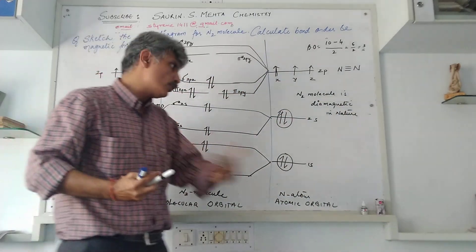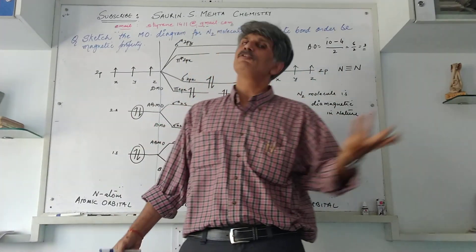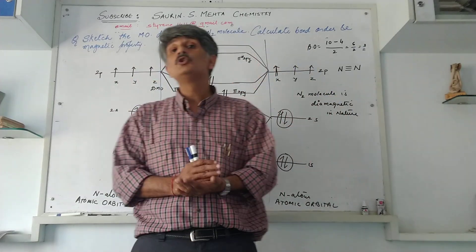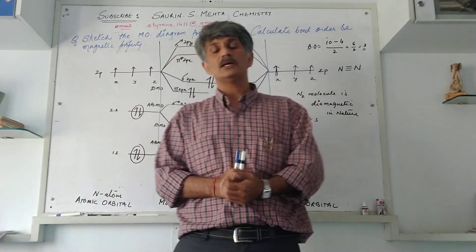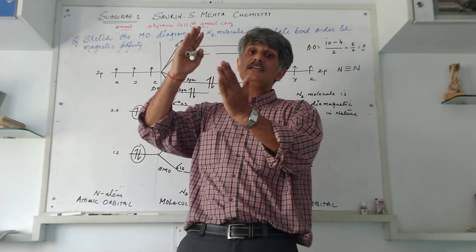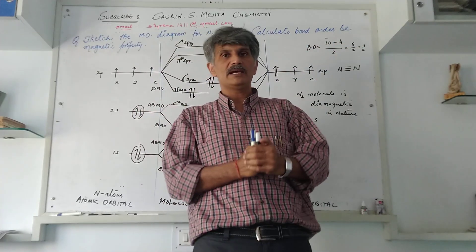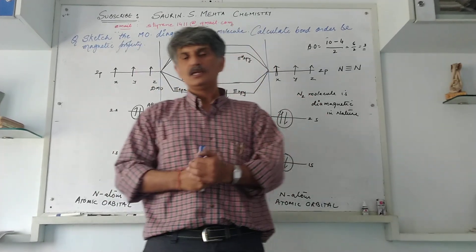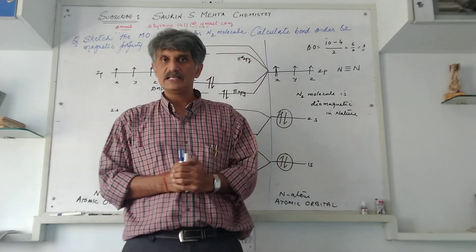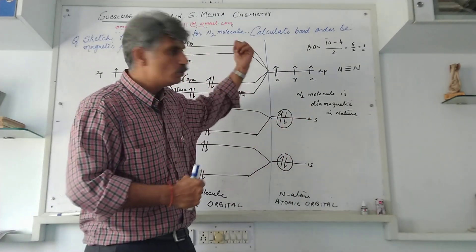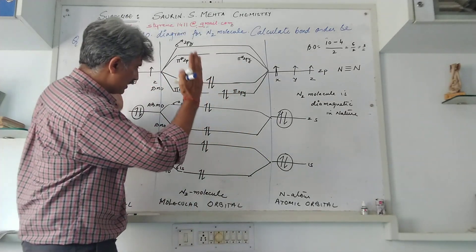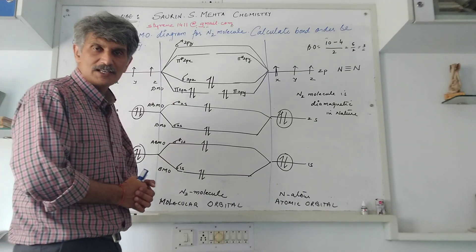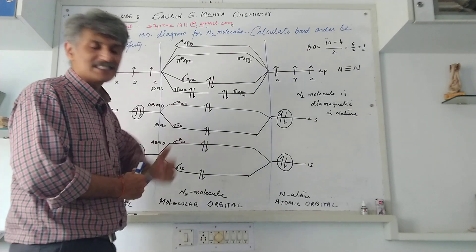Using this same concept, you can calculate the bond order and magnetic property of any molecule — fluorine, oxygen, hydrogen. In the next episode we'll take oxygen molecule, because valence bond theory incorrectly predicts oxygen as diamagnetic, but experimental evidence confirms it is paramagnetic. MO theory will clearly explain this. Prepare these concepts well before the next episode. Thank you very much.